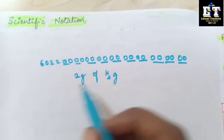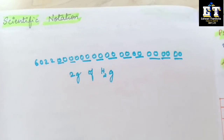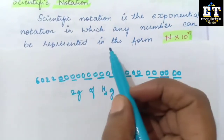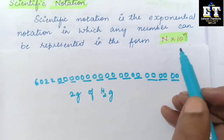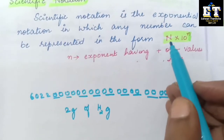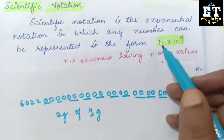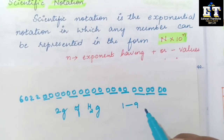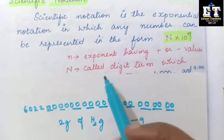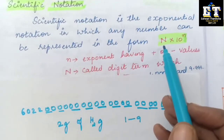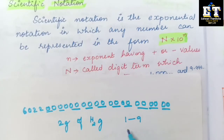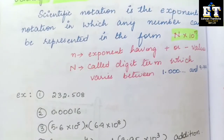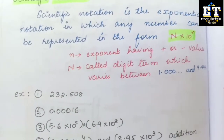Let us see what is the definition for scientific notation. Scientific notation is the exponential notation in which any number can be represented in the form of N into 10 to the power of n. Capital N can be any digit whose value varies from 1 to 9, whereas small n is the exponent.